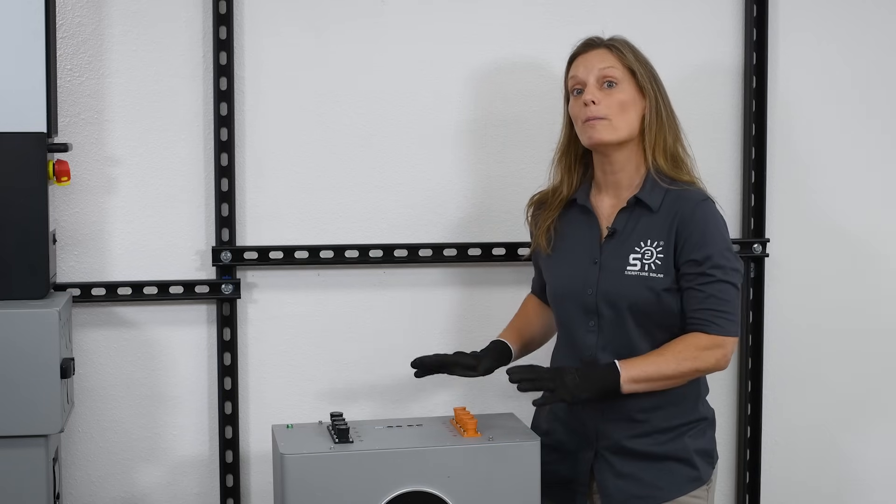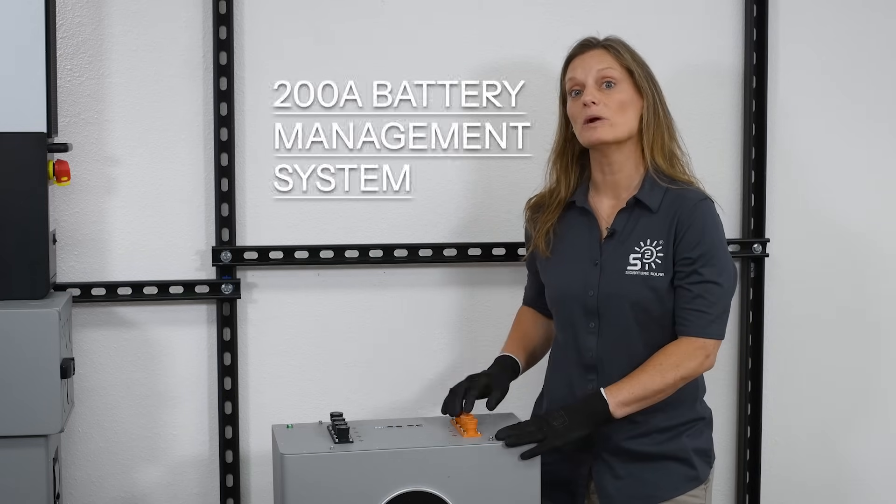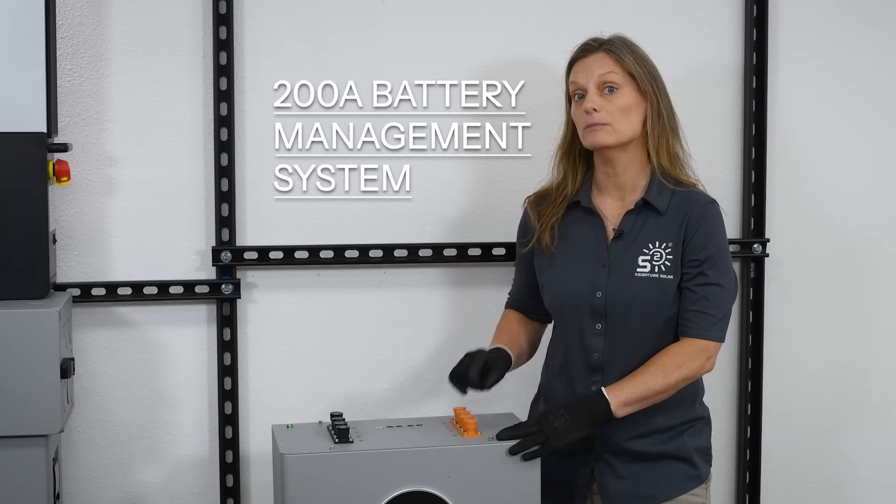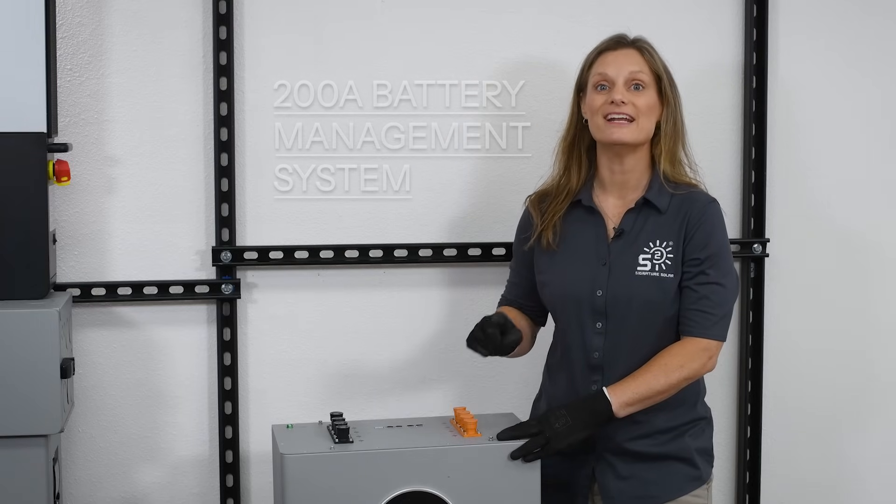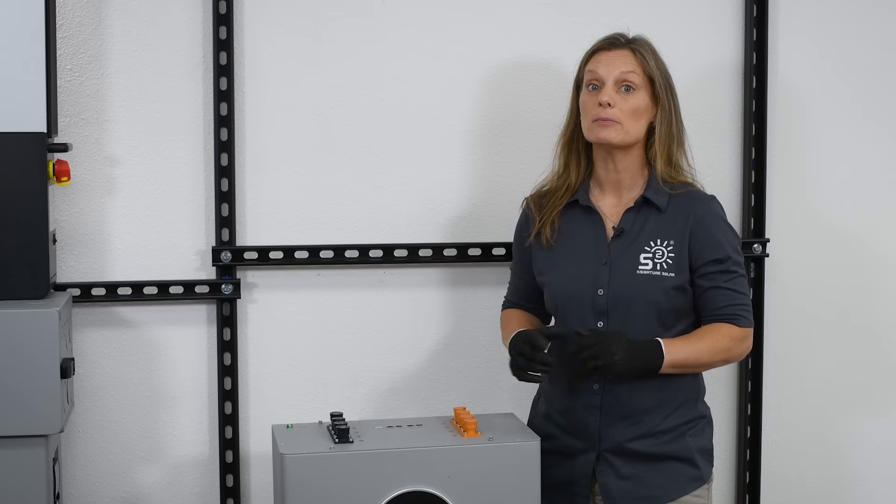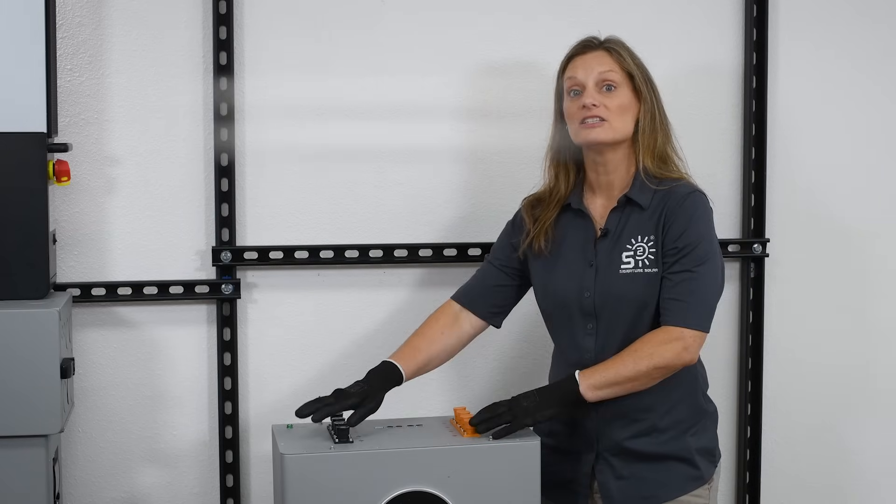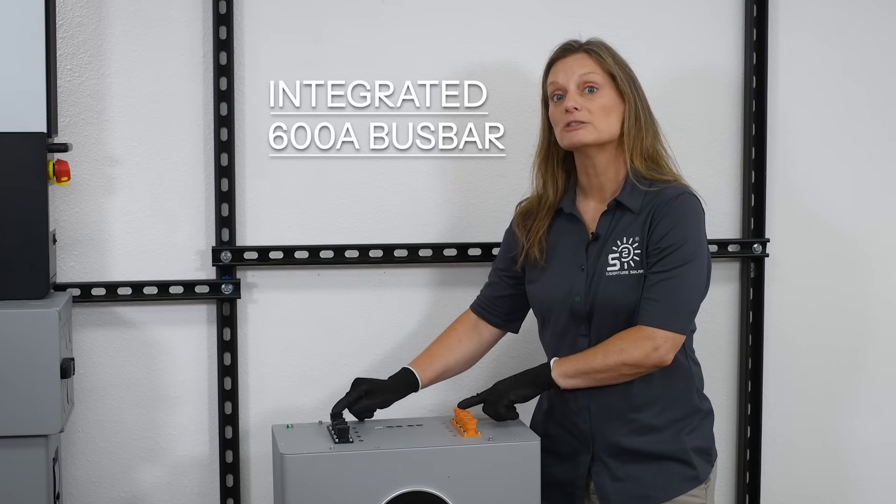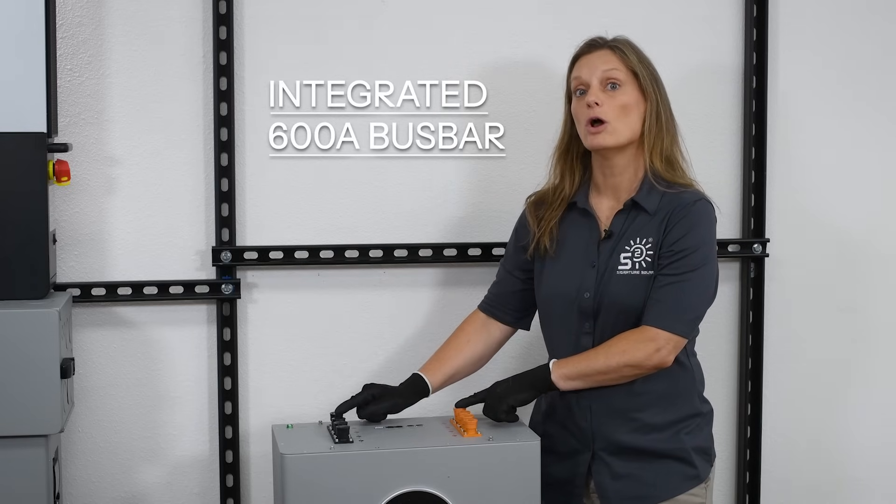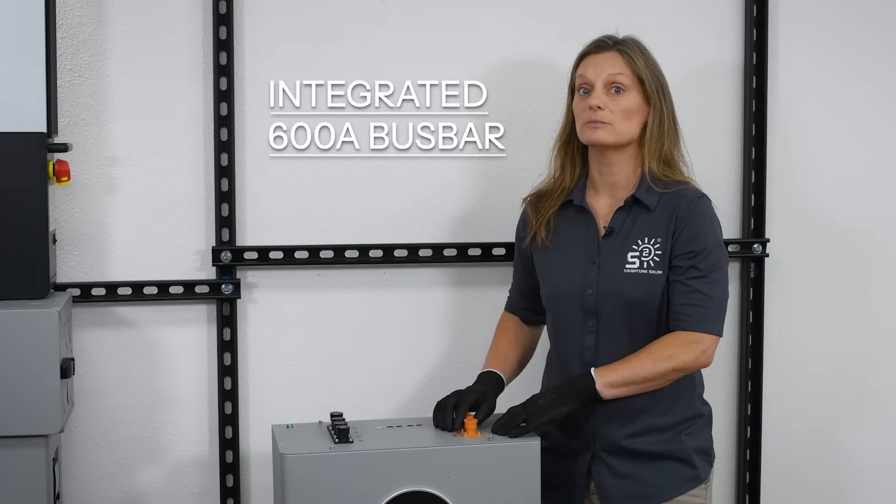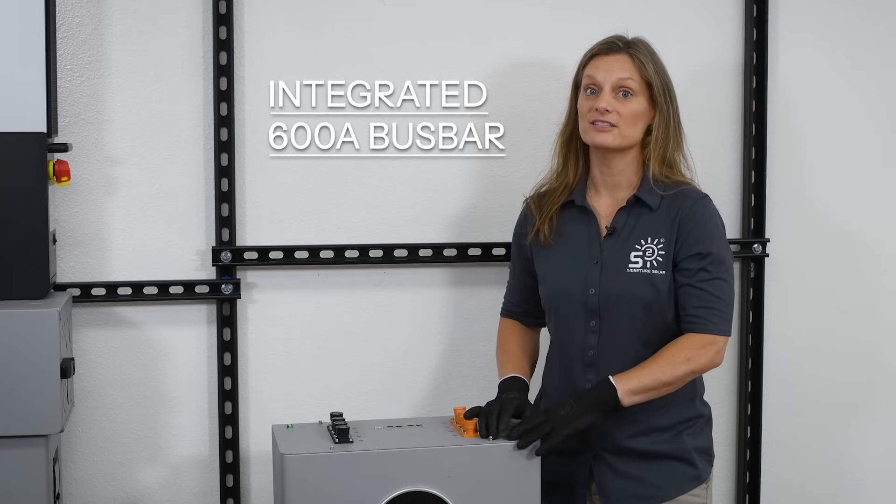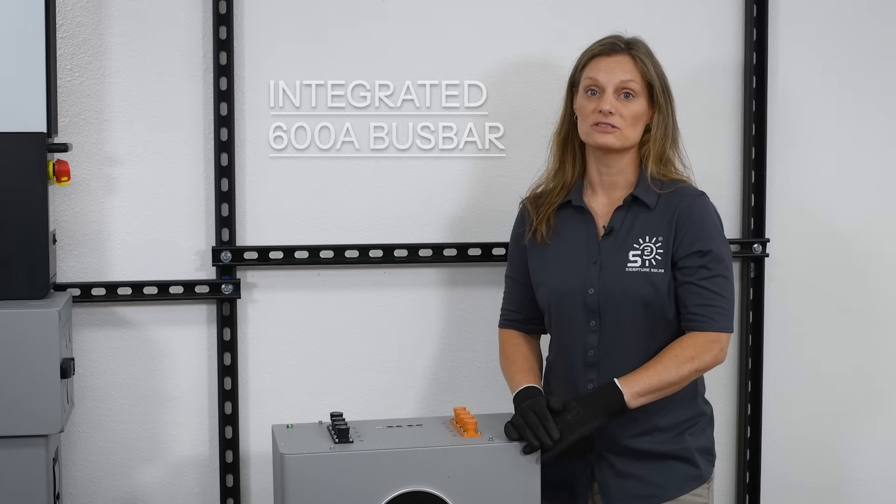The EG4 wall mount comes equipped with a built-in 200-amp battery management system, or BMS, which ensures that each cell operates within its safety parameters, enhancing the battery's overall lifespan and efficiency. Additionally, the integrated 600-amp bus bars allow for multiple connections without the need for external bus bars, simplifying installations and enhancing electrical safety.